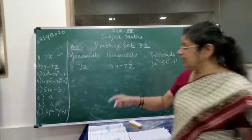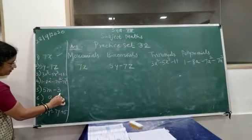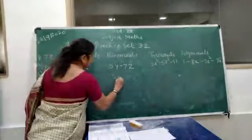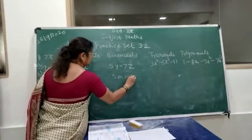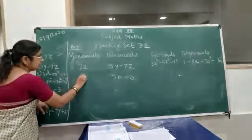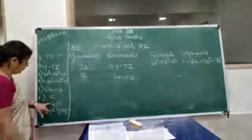Now see the fifth example, 5m minus 3. Again here two terms are there. So this is a binomial. 8, it is a single term. So monomial.